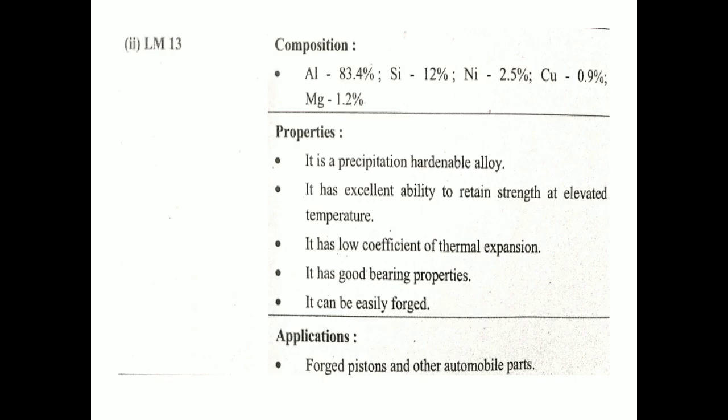Application of LM6 is in castings such as water-cooled manifolds and jackets, motor housings, and pump castings. LM13: the composition is aluminium 83.4%, silicon 12%, nickel 2.5%, copper 0.9%, and magnesium 1.2%. Properties of LM13 are excellent ability to retain strength at elevated temperatures, low coefficient of thermal expansion, good bearing properties, and it can be easily forged. Application of LM13 is in forged pistons and other automobile parts.